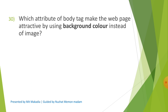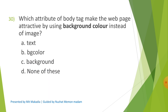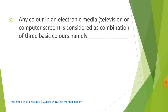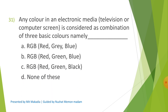Question 30: Which attribute of the body tag makes the web page attractive by using background color instead of image? Options are A) Text, B) BG Color, C) Background, D) None of these. The correct answer is B) BG Color. Question 31: Any color in electronic media, television or computer screen is considered as a combination of three basic colors namely what? Options are A) Red, Gray, Blue, B) Red, Green, Blue, C) Red, Green, Black, D) None of these. The correct answer is B) Red, Green, Blue.